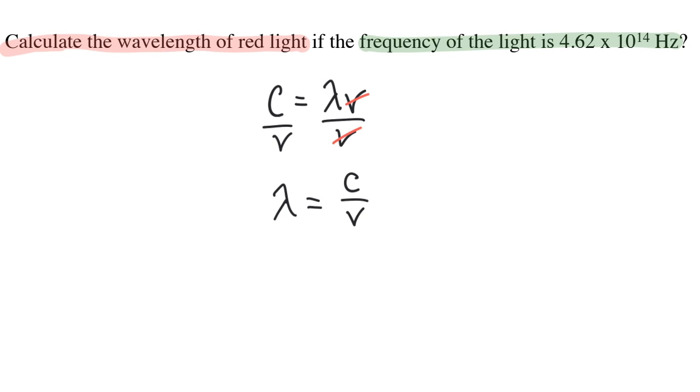Now I can plug in all of my known values. C is always 3.00 times 10 to the 8 meters per second because it's a constant, and the frequency is given in the problem.